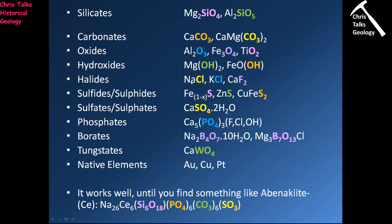Halides are when we have a metal bonded to a halogen — fluorine, chlorine, iodine or bromine. Chlorine is the most common, appearing in minerals like table salt (halite), silvite and fluorite. As long as you have a metal bonded to a halogen, you have a halide.